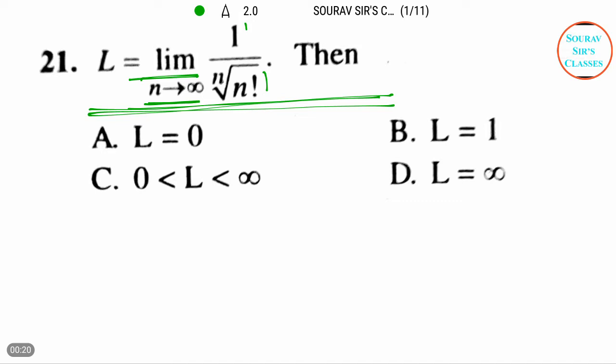We have to solve it and the options are: L equals 0, 0 is less than L and L is less than infinity, B is L equals 1, D is L equals infinity. So now let's move to solve the question.